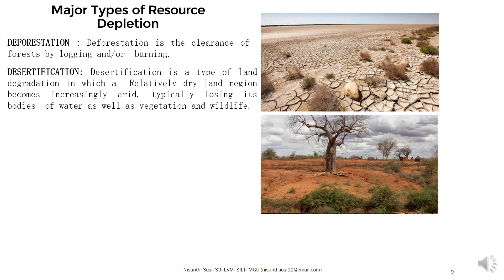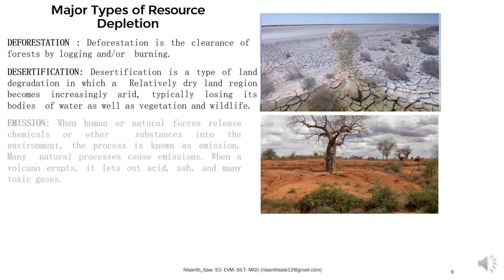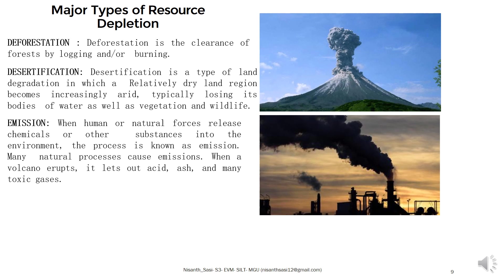Desertification is a type of land degradation in which relatively dry land regions become increasingly arid, typically losing bodies of water, vegetation, and wildlife. Minerals in the soil are depleted as a result. Desertification is also a significant reason for resource depletion.